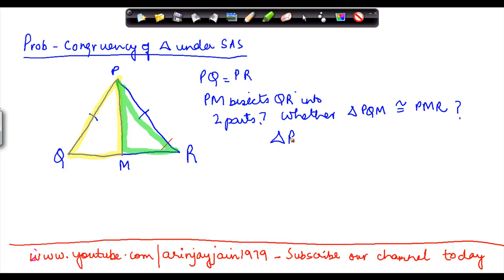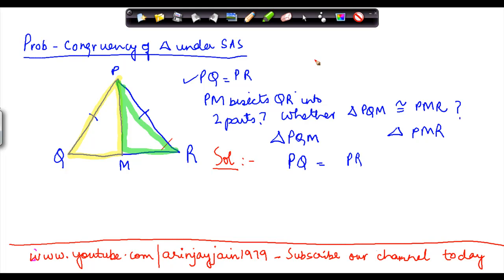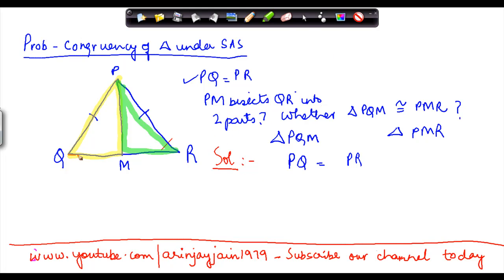Let us see. I have triangle PQM and I have triangle PMR. The first thing is that I have been given that PQ is equal to PR — that is given. The second thing is that PM bisects QR into two parts, which are QM and MR. So QM should be equal to MR, because PM bisects these two into two equal parts.